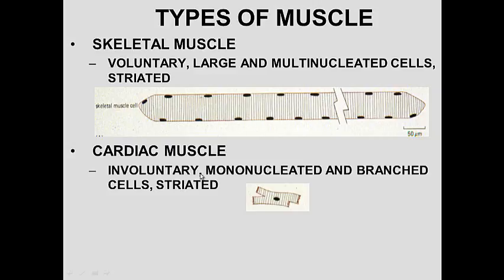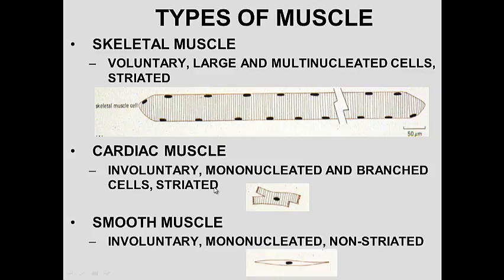Cardiac muscle is also striated but much smaller. The cells are branched and the nucleus is in the center. They still have striations and the functional unit is the sarcomere. Usually one cell has one nucleus, though it could have two. Smooth muscle cells are involuntary — we can't control them — and they have a single nucleus and are non-striated.